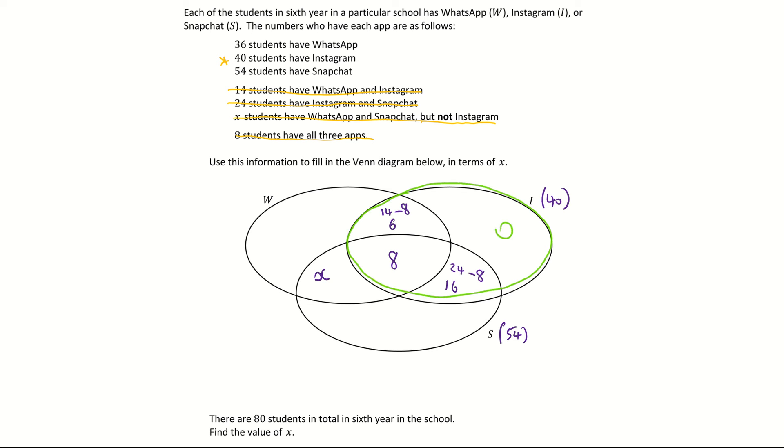Now to get the little region in here what I basically have to do is subtract the 6, the 8 and the 16 which are already accounted for. So I'm going 40 minus the 6, the 8 and the 16. And when I add them together I'm going 40 subtract 30 which is giving me 10. So the little region here for the amount of students who have Instagram only is 10. The reason why I started with that one is because it didn't have an x involved in it.